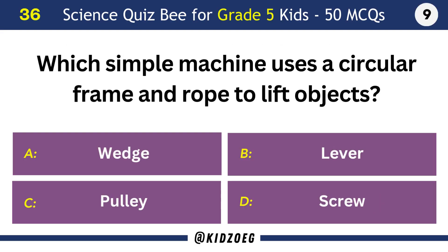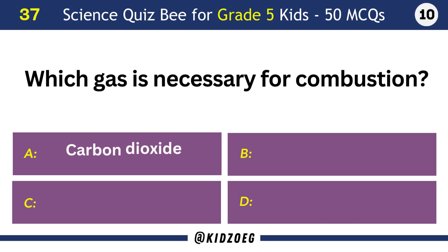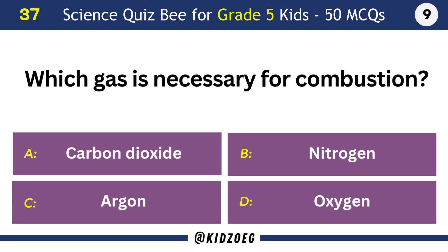Which simple machine uses a circular frame and rope to lift objects? Pulley. Which gas is necessary for combustion? Oxygen.